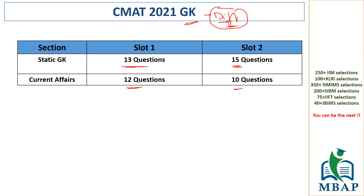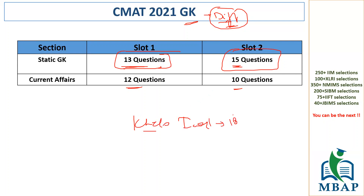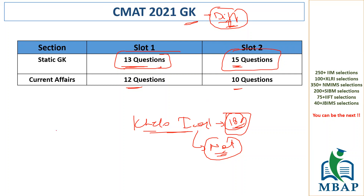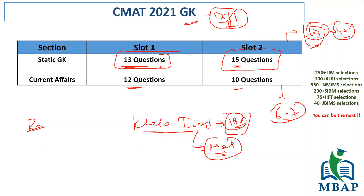GK had more questions on static general knowledge, with almost equal numbers for current affairs. Slot two had more static and less current affairs. Some questions were really tricky — for example, there was a question on Kilo India, which has 18 games, asking which among these is not a part of Kilo India. Knowing all 18 traditional names is quite a task. Questions on previous history and war events were also there. Anyone getting 10 questions right — a score of 40 — would be very good. Most people might end up getting six to seven questions right, making GK the deciding factor.